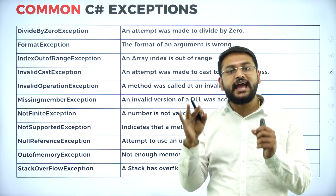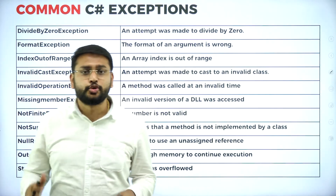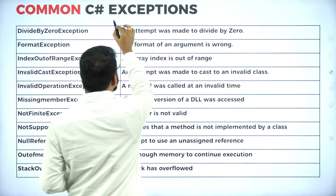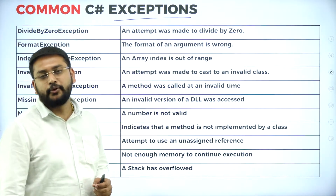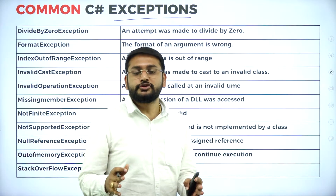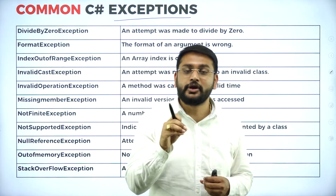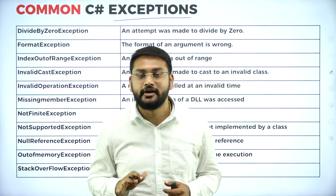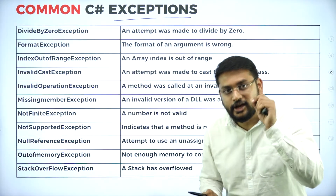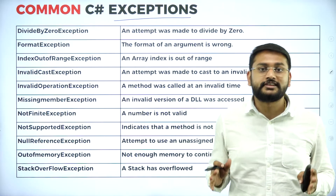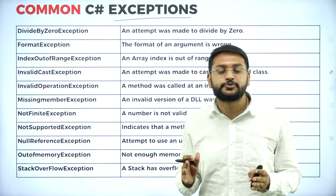The next topic is C# exceptions. An exception is a condition that occurs when I get a runtime error — meaning there is an error in the logic. That is what I call an exception.